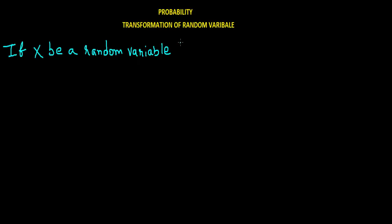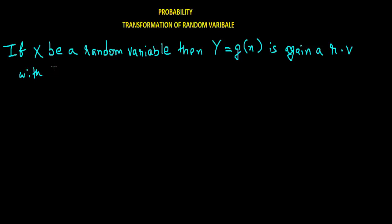Welcome back. Today we will be continuing probability, and we will be learning about transformation of random variables. So if x is a random variable, then capital Y equals G of x is again a random variable with the same range as x. This is the general definition.